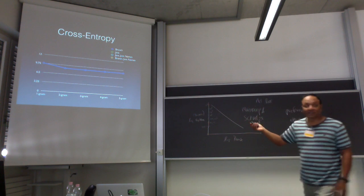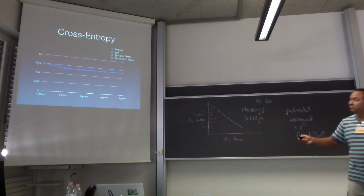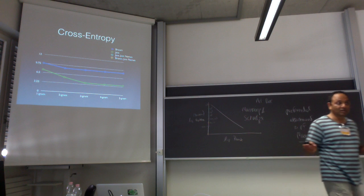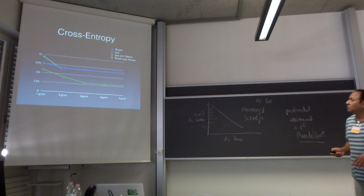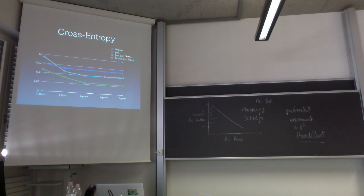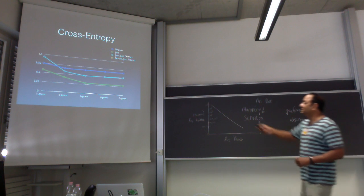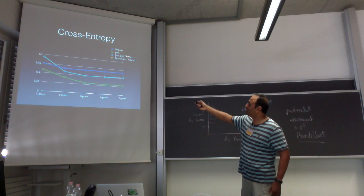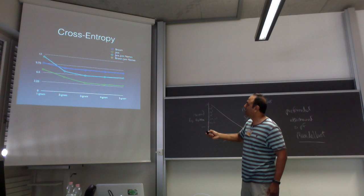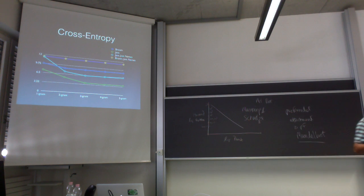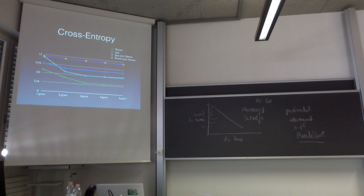There's the standard Brown corpus with all words, and the standard Java — the same plot as before, with all the words in Java. Now we do Java with just the names, leaving out all keywords. You can see that it falls between the full Brown and full Java. And here's Brown with just the names — taking all closed-category words out of Brown.